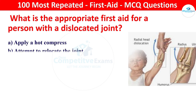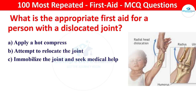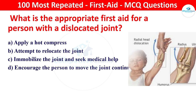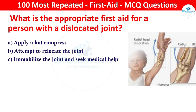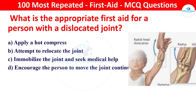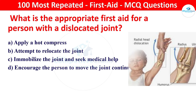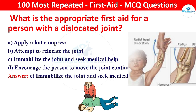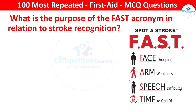Next question: what is the appropriate first aid for a person with a dislocated joint? Options: apply a hot compress, attempt to relocate the joint, immobilize the joint and seek medical help, or encourage the person to move the joint continuously. The right answer is immobilize the joint and seek medical help. Immobilizing the joint helps prevent further damage and professional medical assistance is necessary for relocation.